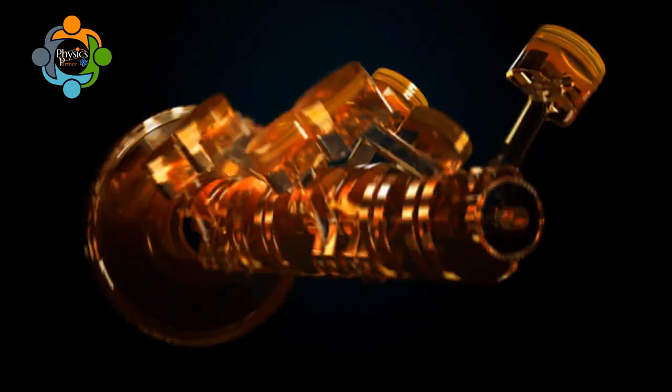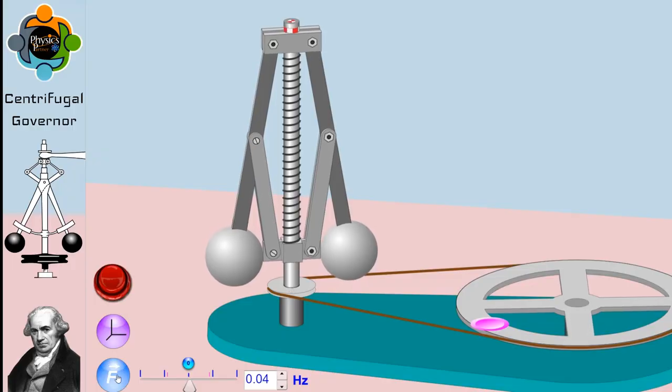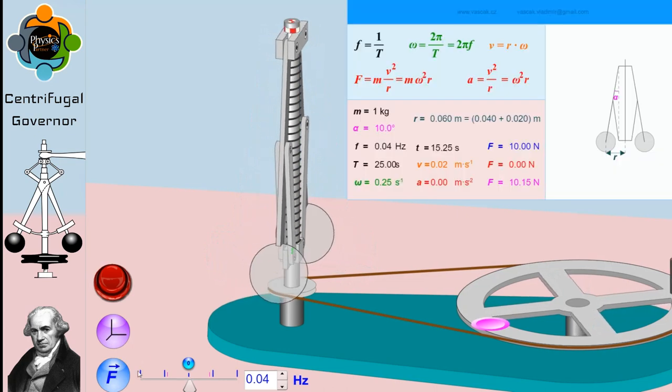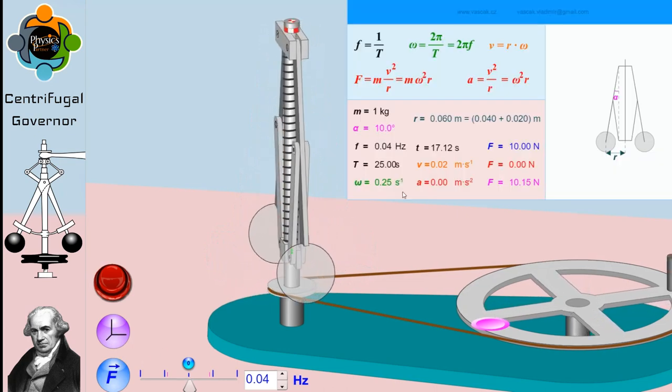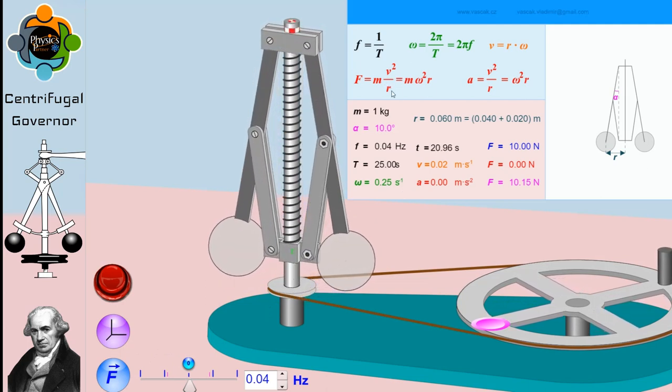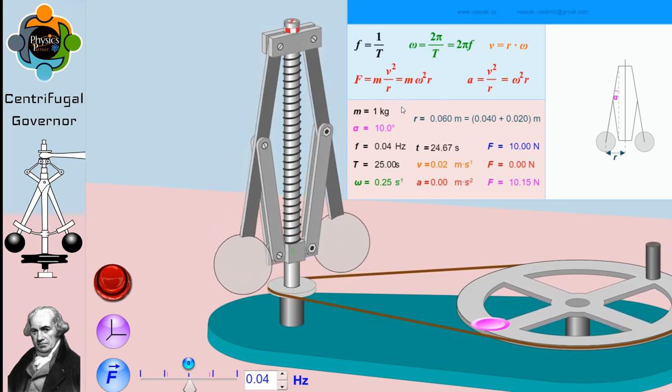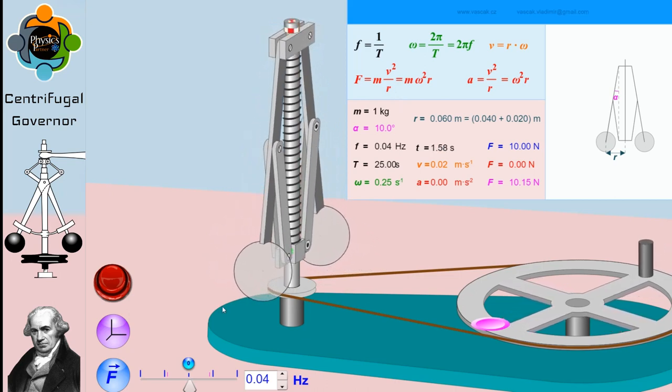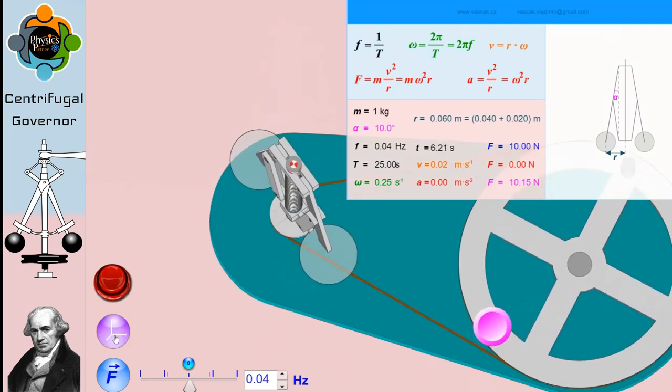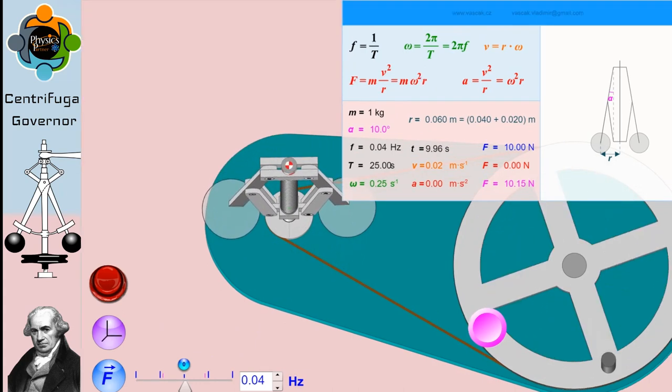This in turn causes the engine speed to decrease until the weights move inward, causing the linkage to increase the flow of fuel and stabilize the engine speed. Let's see the physics formula associated with the centrifugal force. One of the key formulas you can see on the screen is F = mv²/r, where F is centrifugal force, m is the mass of the body, v is the velocity, and r is the radius.